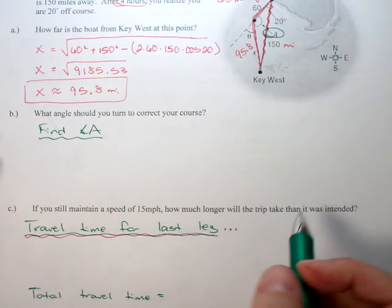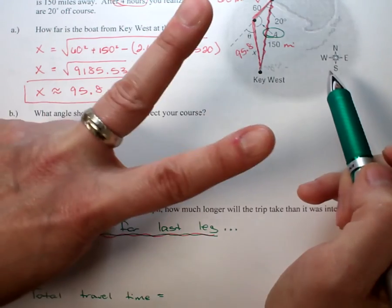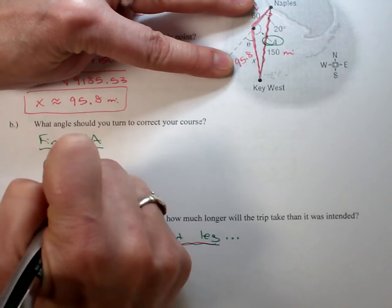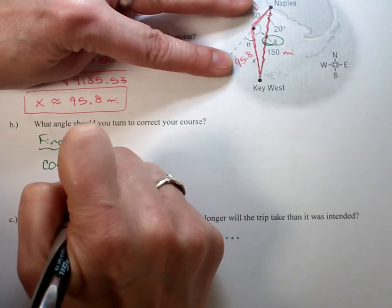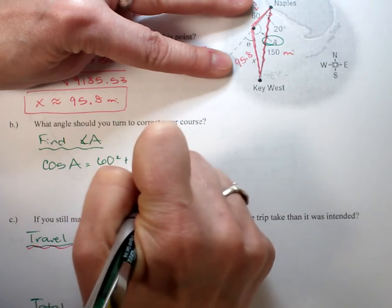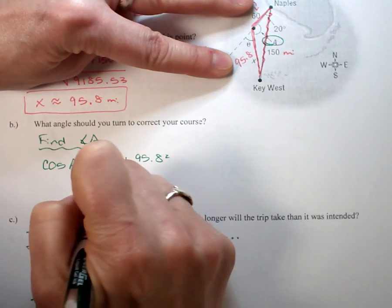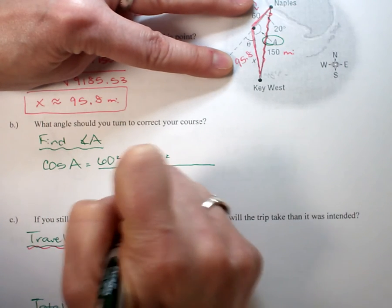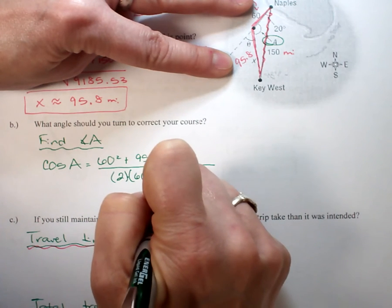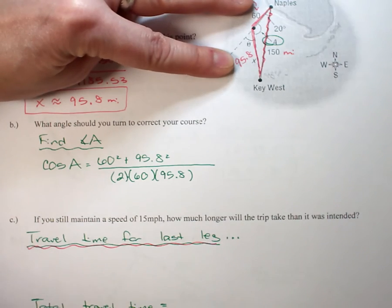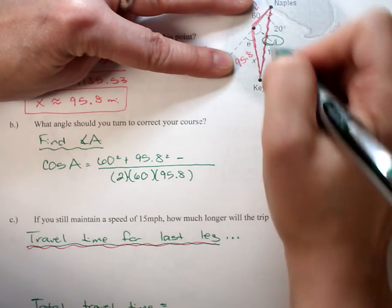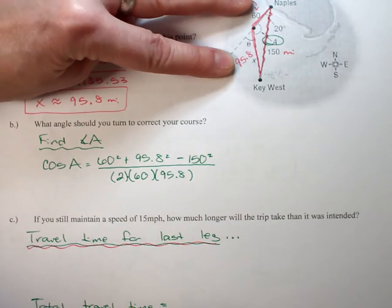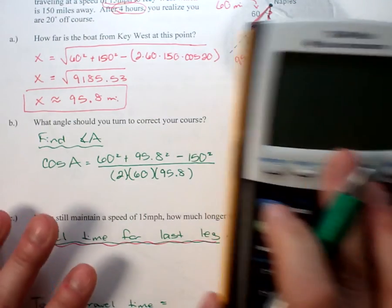We can go back to our other form. Peace fingers go on each side, so that's going to be cosine A. Square the peace fingers and add them together in the numerator: 60 squared plus 95.8 squared. In the denominator we're going to multiply them together - I'm going to use parentheses because the decimal looks confusing. Then I'm going to subtract the square of the opposite side, so subtract 150 squared.